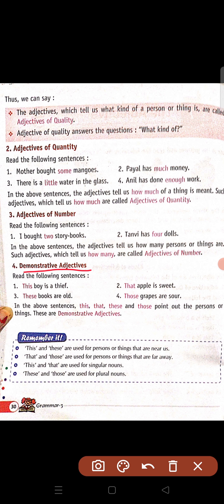So joh aapko sentences mein bata hai — woh boy, woh apple, yeh books, aur woh grapes — means point out kar rahe hain hum kisi person ko ya cheez ko. Toh jo kisi cheez ko point out karta hai ya kisi bhi person ko, unhey aap bolte hain demonstrative adjectives.